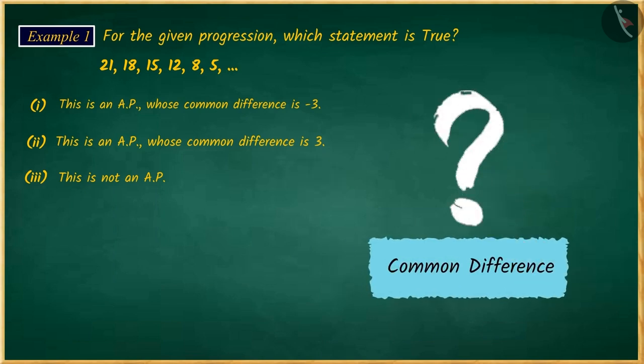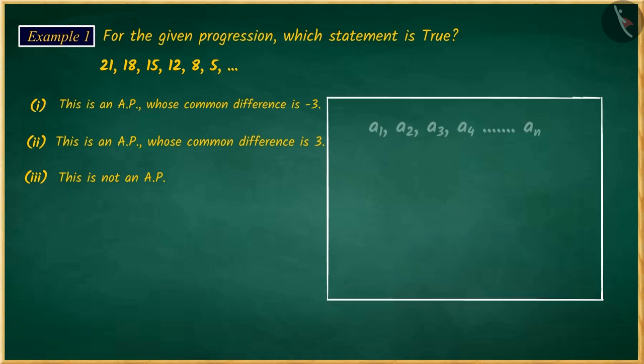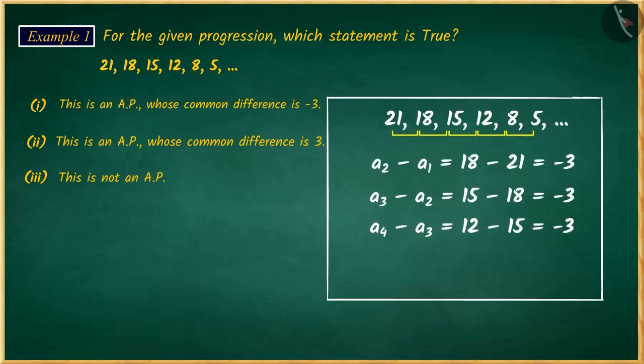Can you tell me what is the common difference? The difference between any two consecutive terms of an arithmetic progression is called the common difference. So, let's find the common difference of this series. If we find the difference between any two consecutive terms, then you will see that the difference between any two consecutive terms is not the same in all the cases, because of which this will not be an AP.